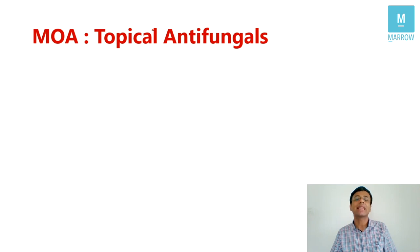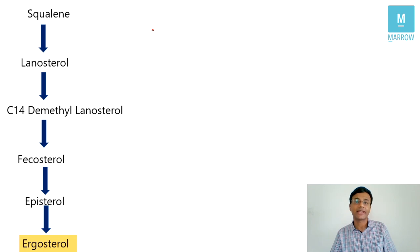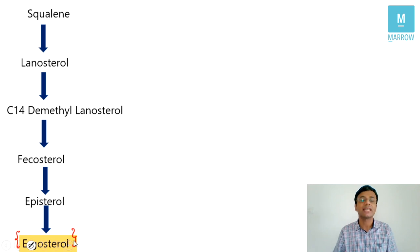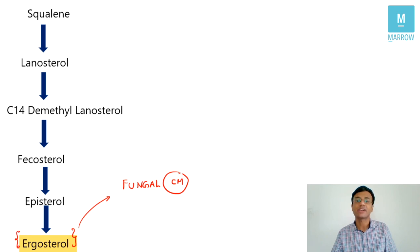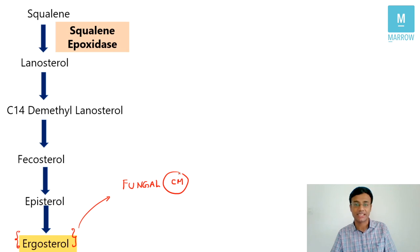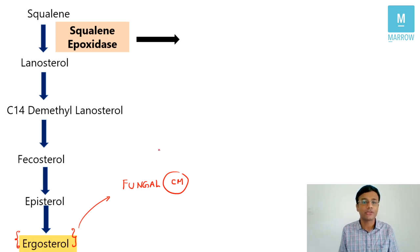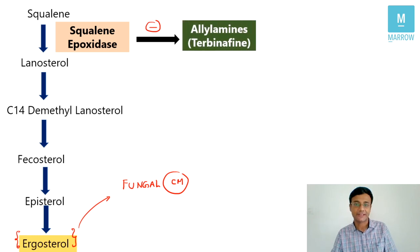Moving on to important topical antifungals and how they work. Ergosterol is the main content of the fungal cell membrane. In the synthesis of ergosterol, the first step is squalene being converted to lanosterol by squalene epoxidase. An important group of drugs — the allylamines — inhibit this squalene epoxidase. The example for allylamines is terbinafine, a very important drug.